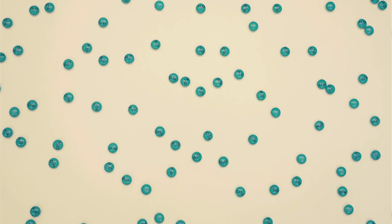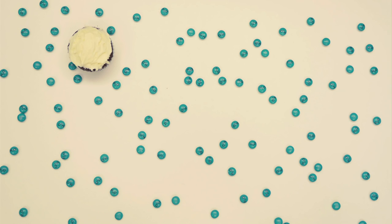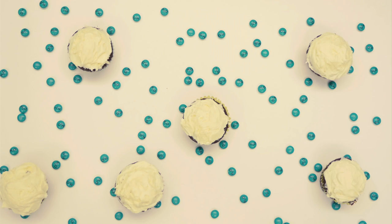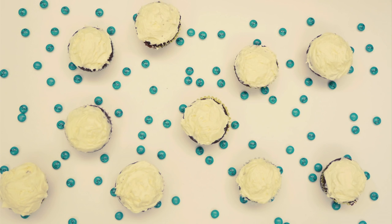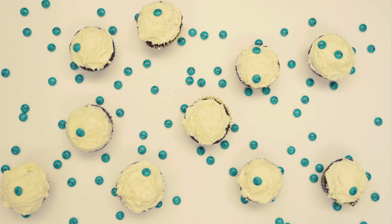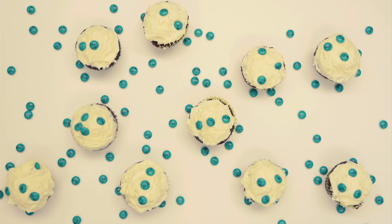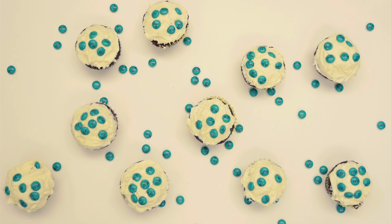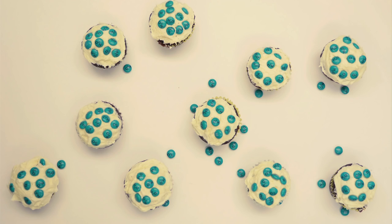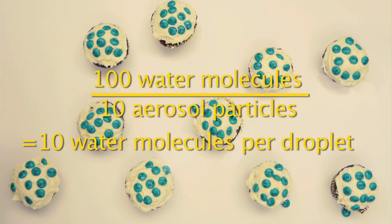Let's go back to our cupcakes and our M&Ms. Imagine that we have 100 water molecules in the atmosphere, represented by these M&Ms. If we add a lot of aerosol particles — say 10 — the water molecules have many options and can condense across all of the particles. They spread out evenly so that each cloud droplet only has a little bit of water. In this case, 100 molecules are distributed across 10 particles, meaning each particle only has 10 water molecules. This results in many small droplets. Because the droplets are so small, they are lightweight and won't fall out of the sky as rain, making this cloud a nice fluffy white cloud.